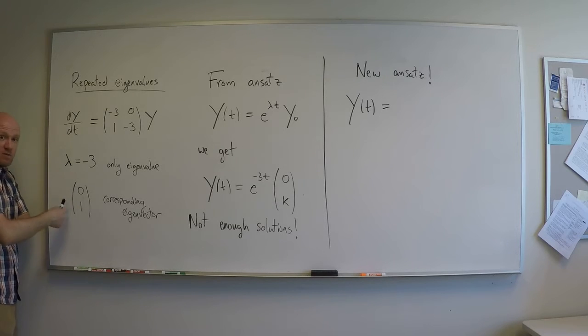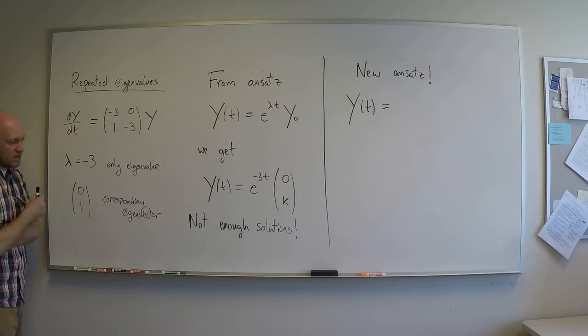And of course, any multiple of this will also be an eigenvector, any 0, k, for k not equal to 0.